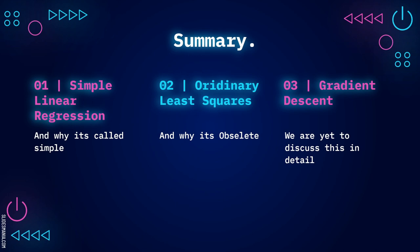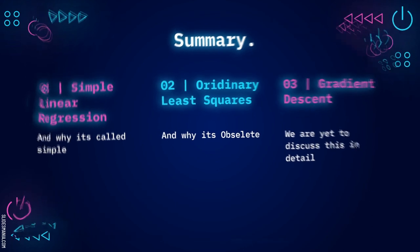We also saw how ordinary least squares method works. At the same time, we also know why that method is obsolete. The other thing that we have learned is we have another method to solve linear regression. And it's called gradient descent. And that is what makes linear regression a machine learning algorithm. We'll be looking at it in detail in the next video.